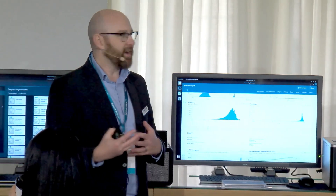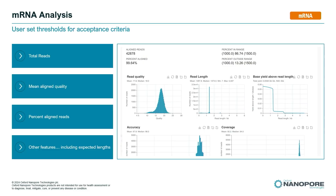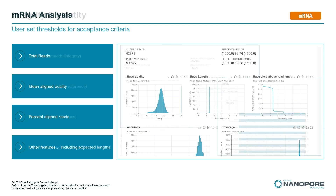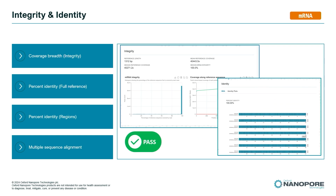For mRNA, you can set thresholds for all of these attributes: total number of reads, mean aligned quality, percent aligned reads. The percent aligned reads is particularly useful — you're expecting your whole prep to align to the reference you've provided. If you have less than 100% aligning, it could indicate contamination or the wrong molecule. In this example, 99.64% of reads aligned, and we had 42,000 reads covering the molecule with really high coverage — just in two hours of sequencing. We also track expected length. Coverage breadth is really important: this mRNA integrity histogram should be shifted all the way to the right, meaning 100% of molecules are intact. If it shifts to the left, something is wrong.